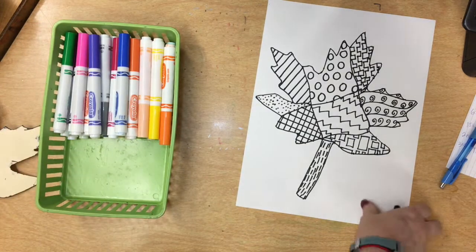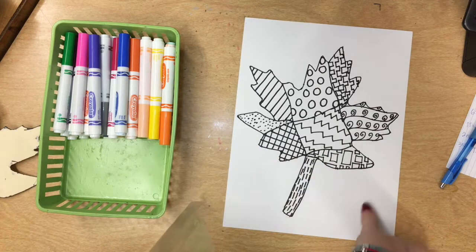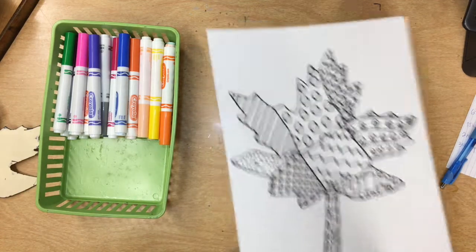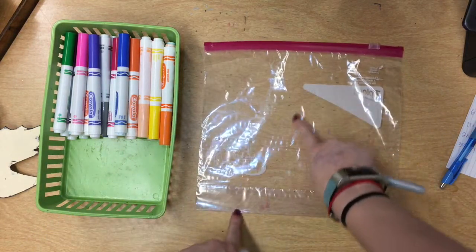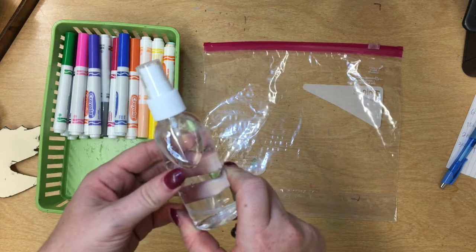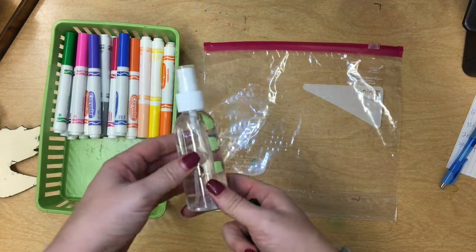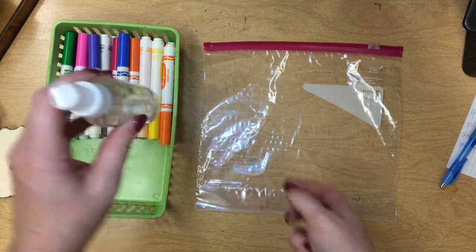I'm going to be making a marker print, which means I'm going to be stamping some color onto my leaf, so for now I can set it aside. And the materials that I grabbed are a Ziploc bag, my markers, and a spritzer bottle or atomizer. Just any spray bottle will do, though, if you're at home.